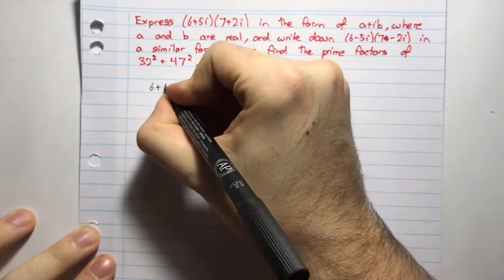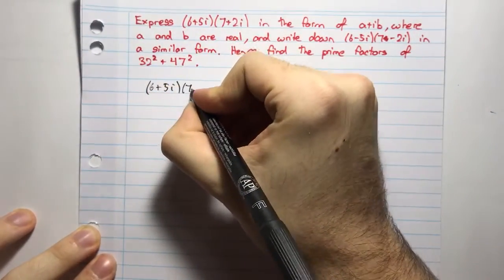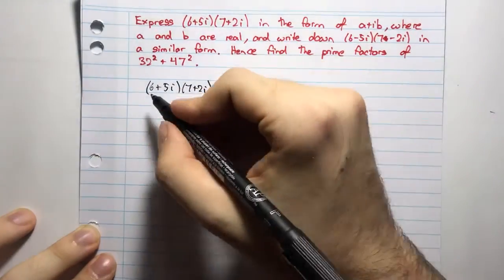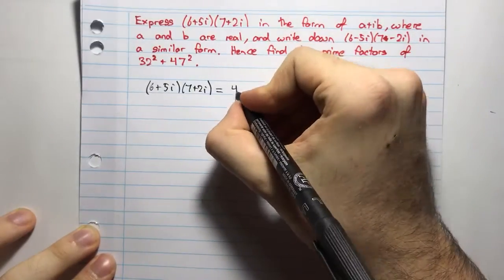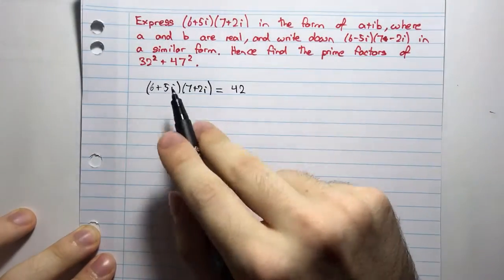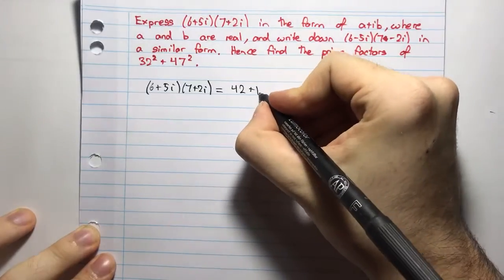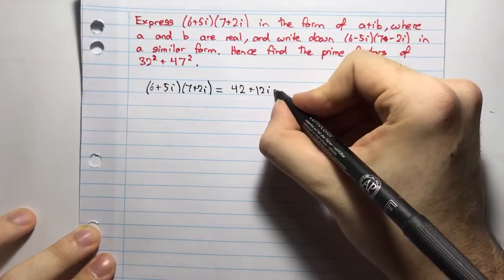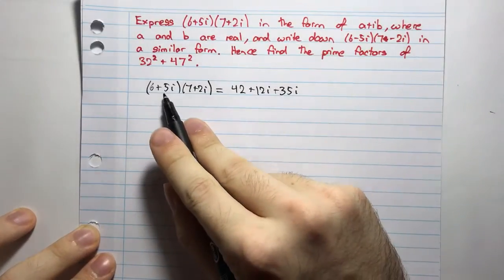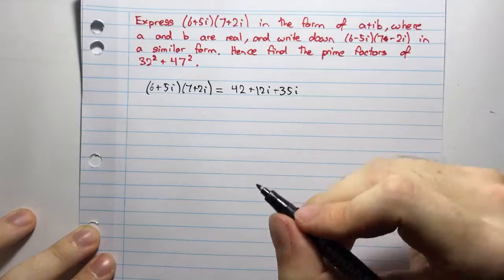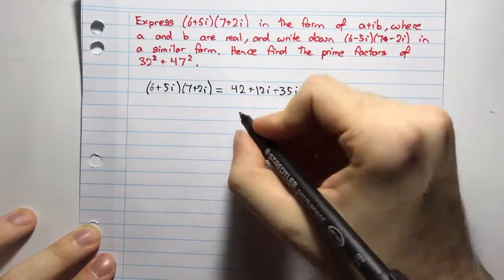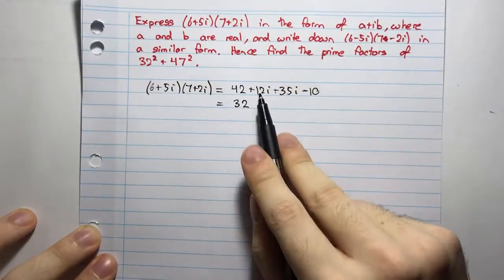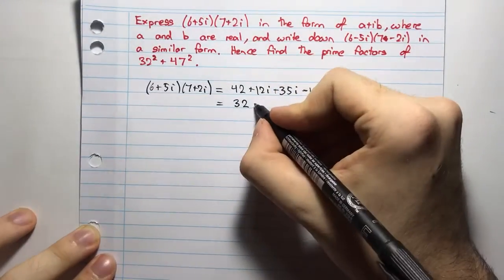So, (6+5i)(7+2i), that equals what? Okay, that's going to be 6 times 7, which is 42, plus 6 times 2i, which is 12i, plus 5 times 7, 5i times 7, which is 35i, plus 5i times 2i, which is 10i², or negative 10, and that gives me 42 minus 10 is 32, 12i plus 35i is 47i.